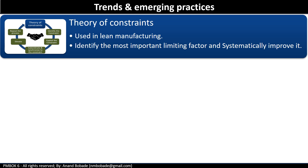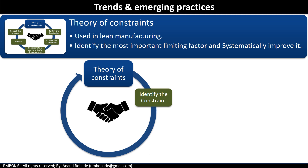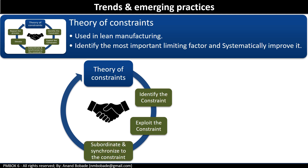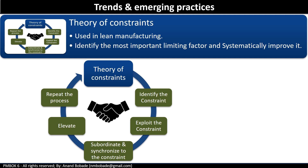The theory of constraints is used in lean manufacturing. It helps you identify the most important limiting factor and systematically improve it. A constraint is also often referred to as a bottleneck. It uses a process known as 5 focusing steps to identify and eliminate constraints: first, identify the constraint; second, make a quick improvement using existing resources — make the most of what you have; third, review all other activities in the process to ensure they are all aligned; fourth, elevate — take analysis to the next level, and if the constraint still exists, consider what further action can be taken to eliminate it; and finally, repeat the process until it is no longer a constraint.